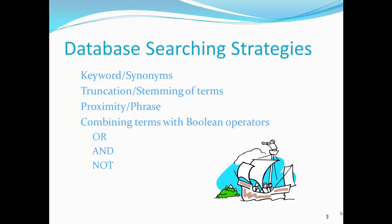It is essential to understand how to use keywords, when to use synonymous terms to expand your search, and when variant spellings might need to be considered. It is also critical to understand how and why truncation or stemming of terms might be needed. We will also examine the role of proximity or phrases and Boolean operators: OR, AND, and NOT.